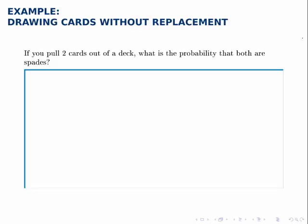As we said before, drawing cards without replacement means that the events are not independent, because once I've drawn the first card, that changes what the deck looks like for the second card.